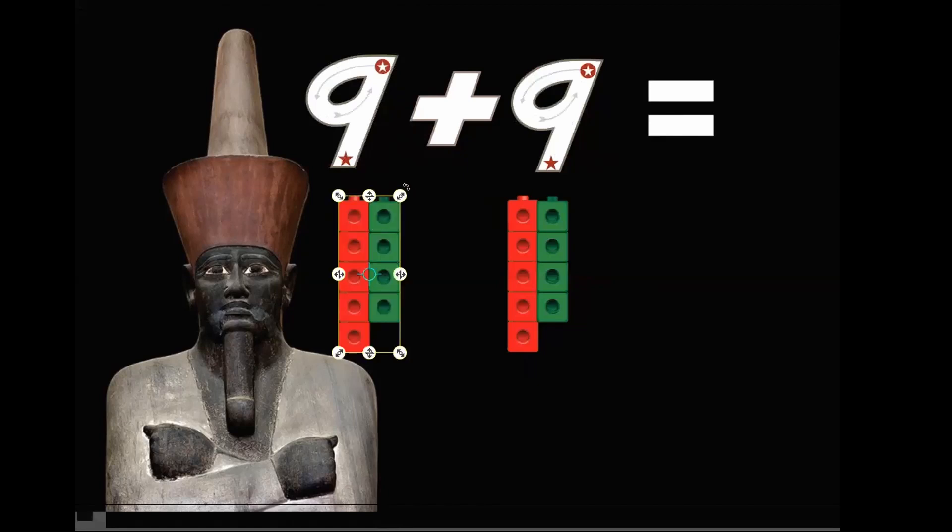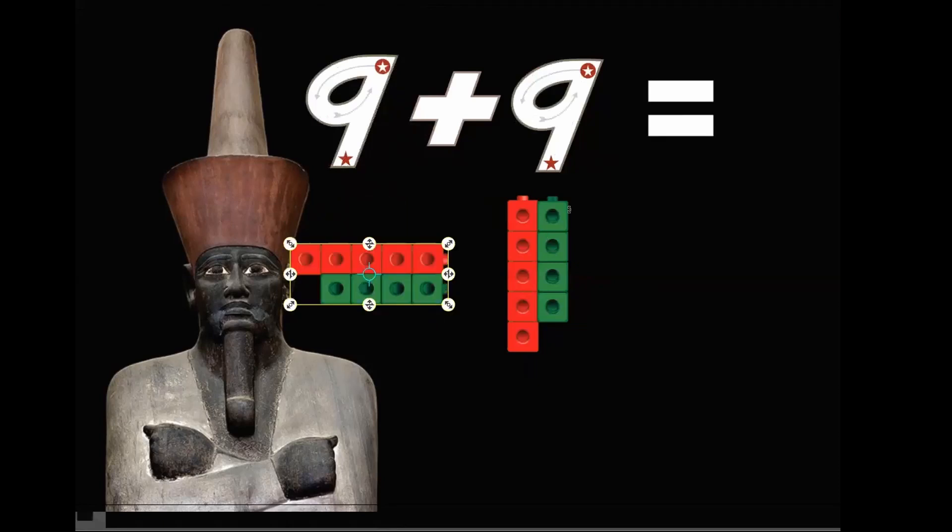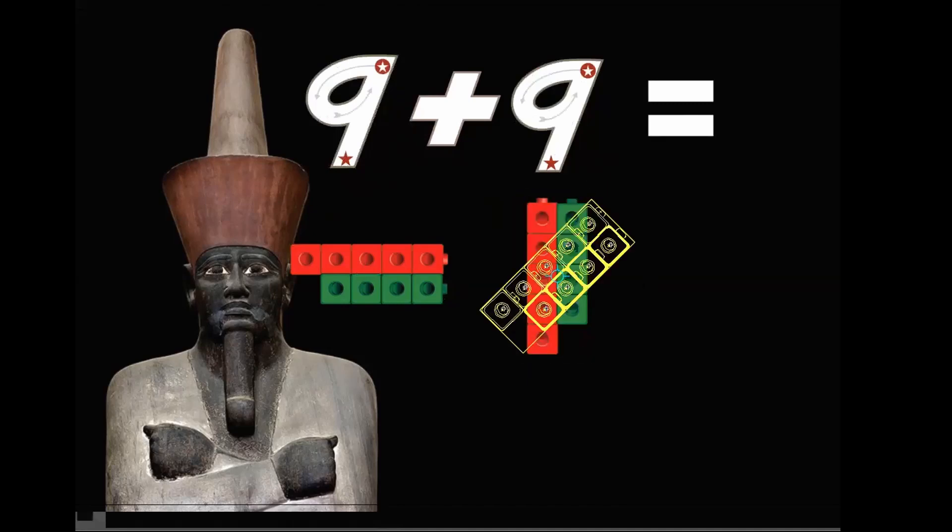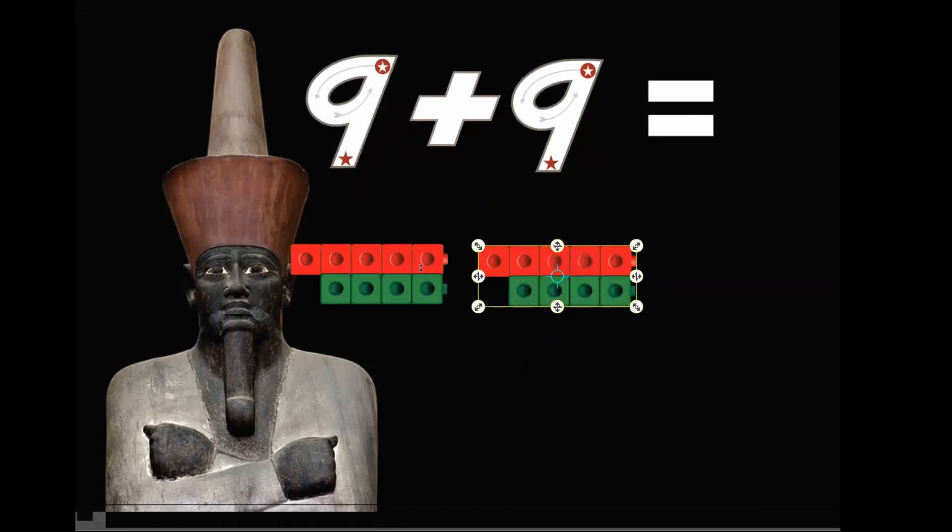So we want to have nine on one side and nine on the other side. And it's very helpful if you have counting toys. If you don't I understand. But it's very helpful if you have counting toys.